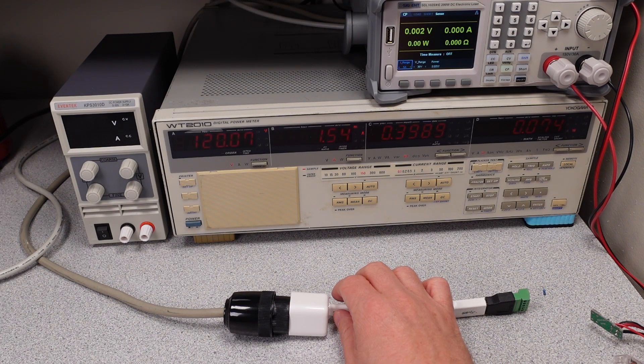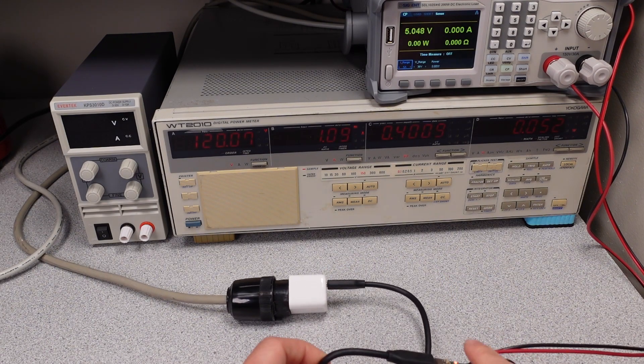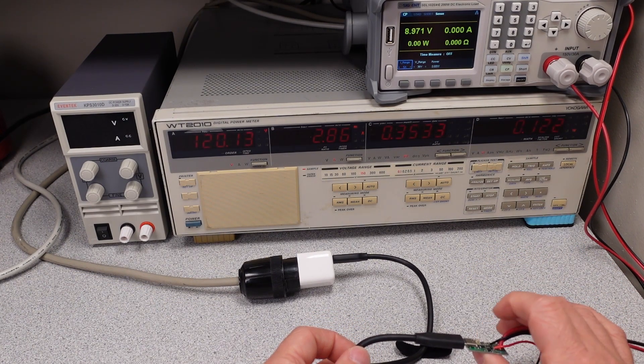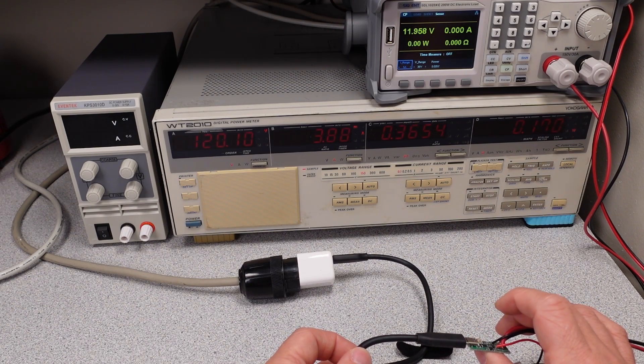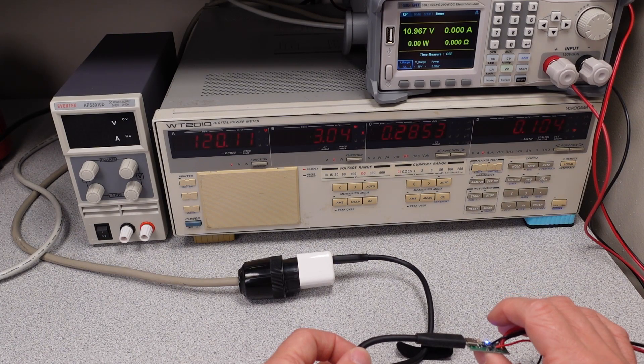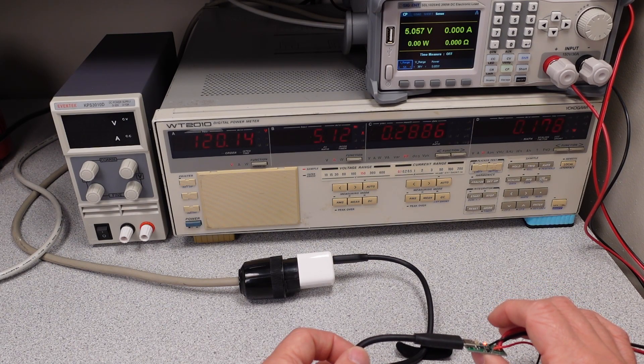Let's put it under some load and see how it does. So we have our USB tester here. And we can go ahead and switch through some modes and see what it'll do. So it does a 9-volt mode, we have a 12-volt mode, we have a variable mode, second variable mode, and then back to the 5-volt mode.